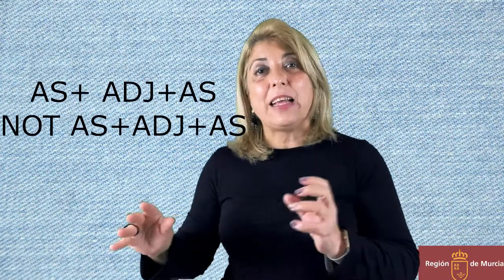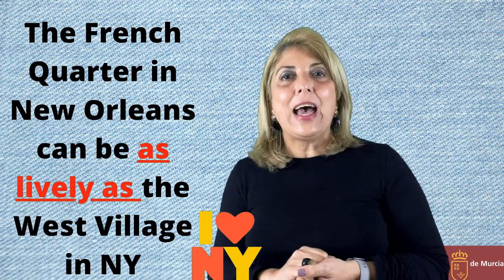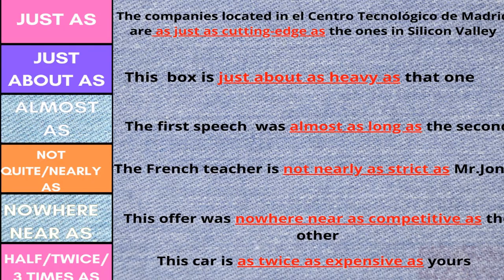Another way of comparing is saying that two things are equal or different in some way. For that, we use the structure 'as + adjective + as' or 'not + as + adjective + as.' For example: 'The companies located in the Centro Tecnológico de Madrid are just as cutting-edge as the ones in Silicon Valley.' In a similar way, you can also use: 'just about as + adjective + as,' 'almost as + adjective + as,' 'not quite / not nearly + adjective + as,' 'nowhere near as + adjective + as,' or 'half / twice / three times as + adjective + as.'